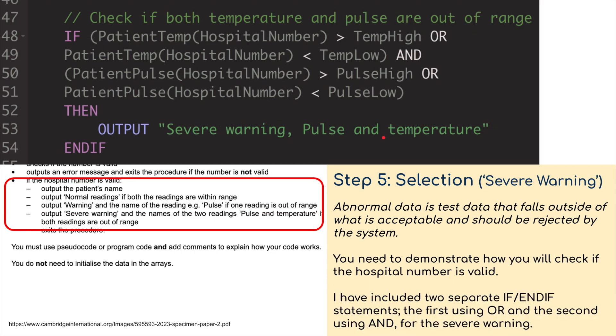Then the final thing, we've got to check if both temperature and pulse are out of range. Higher than temp high, lower than temp low, an or in there, and it's higher than pulse high or lower than pulse low. If it's checking both, then we're going to output a severe warning, pulse and temperature. So that's both readings giving the severe warning there.